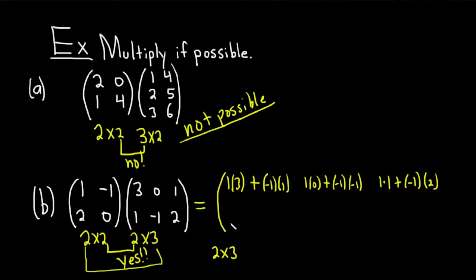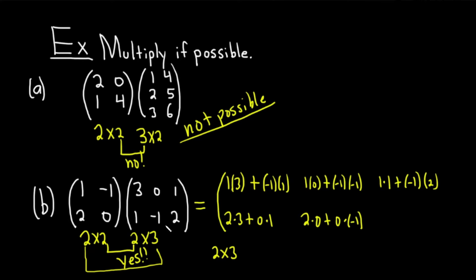Now the second row. Second row, first column — use the second row and first column: 2 times 3 plus 0 times 1. Second row, second column: 2 times 0 plus 0 times negative 1. And the second row, third column: 2 times 1 plus 0 times 2.